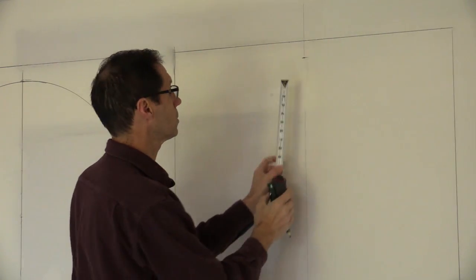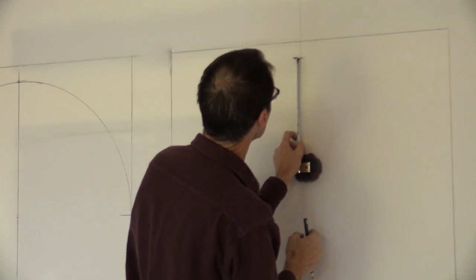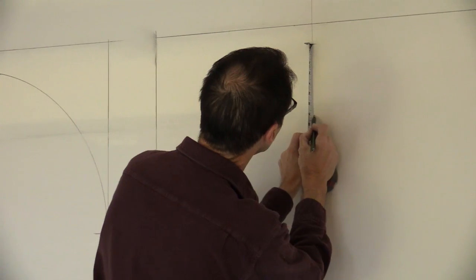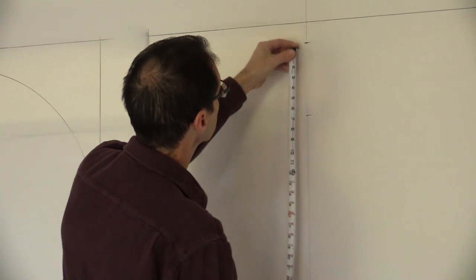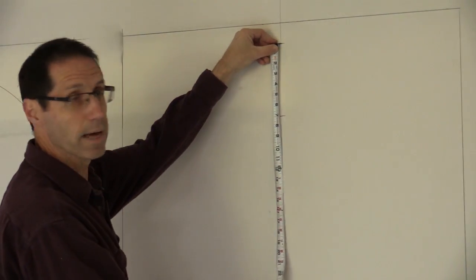So what I've chosen is 7 inches. I'm going to mark out 7 inches. So my rise from the top of the arch is 7 inches.